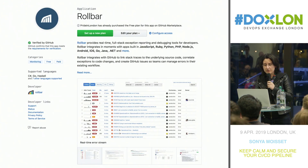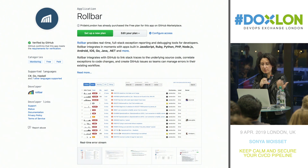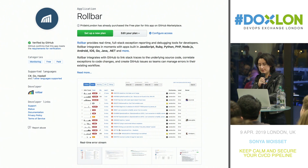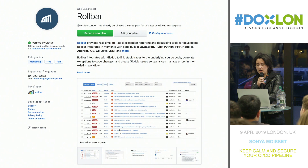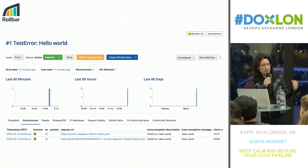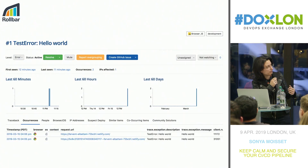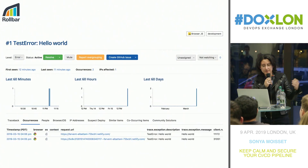For monitoring, we're using Rollbar — a reporting and debugging tool for developers. This is used when you push your website live, and they will show you if there are any issues online.